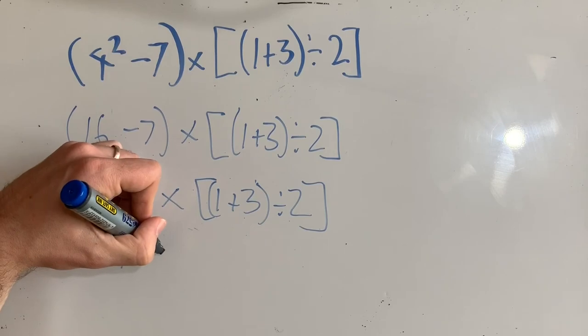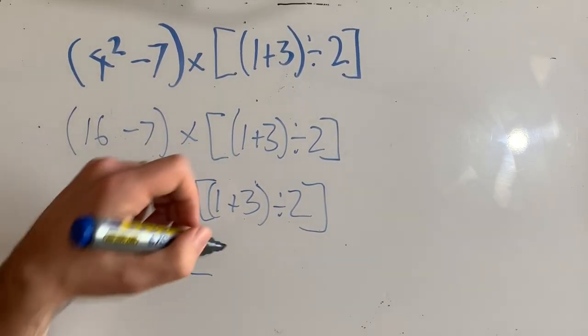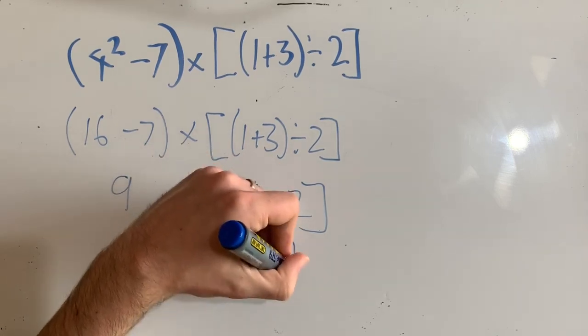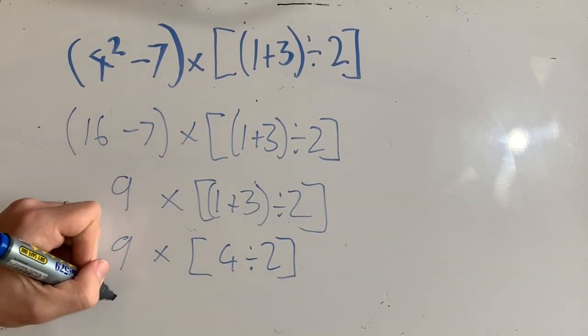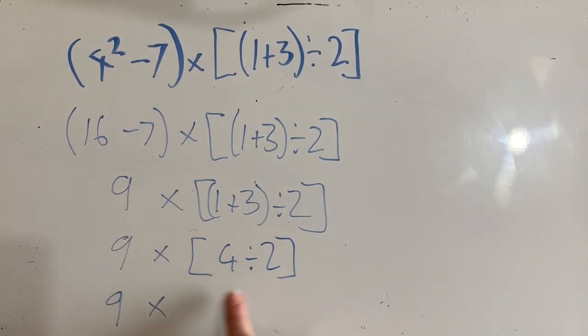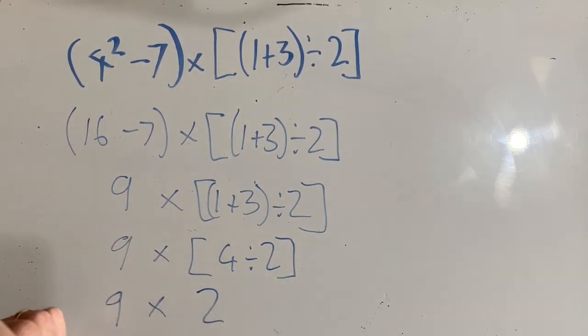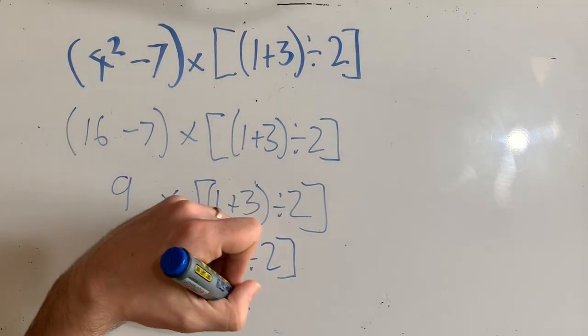And it's 1 plus 3, which is 4. And I'm going to go down one more line. 9 times now what's 4 times 4 divided by 2, which is 2. 4 divided by 2 is 2. So now I've just got 9 times 2, which is after all of that,